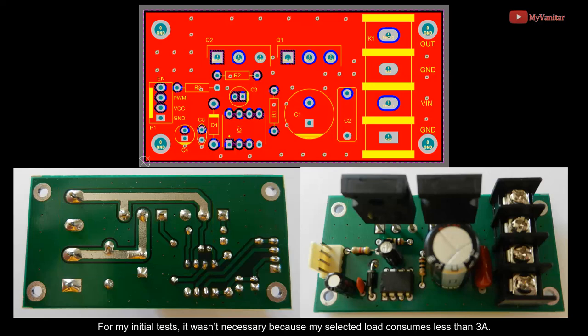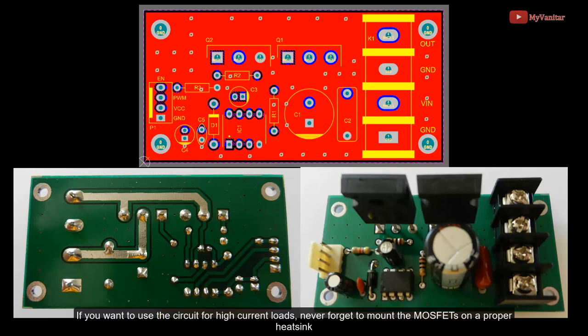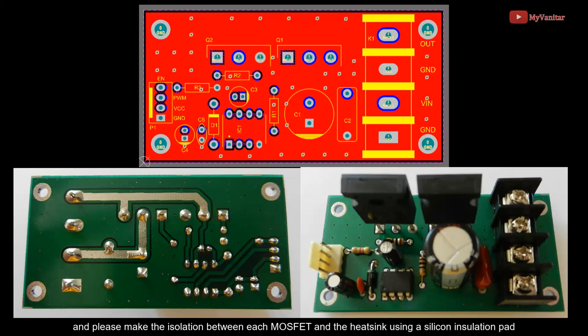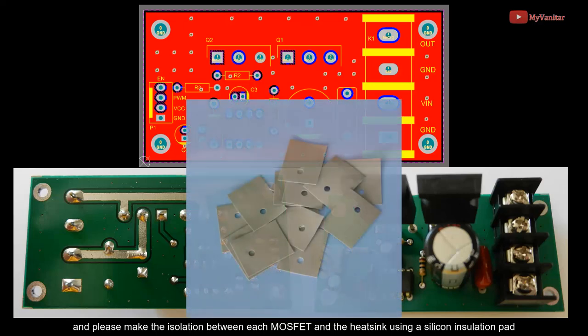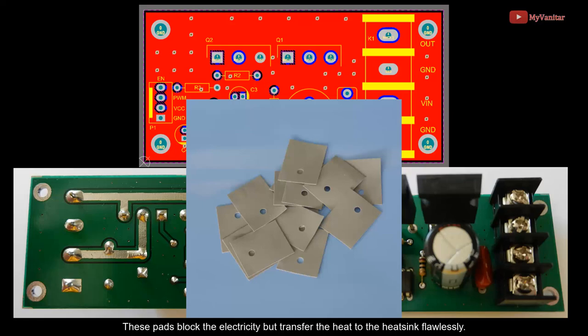For my initial test it wasn't necessary because my selected load consumes less than 3 amps. If you want to use the circuit for high current loads, never forget to mount the MOSFETs on a proper heatsink and make the isolation between each MOSFET and the heatsink using a silicon insulation pad. These pads block the electricity but transfer the heat to the heatsink flawlessly.